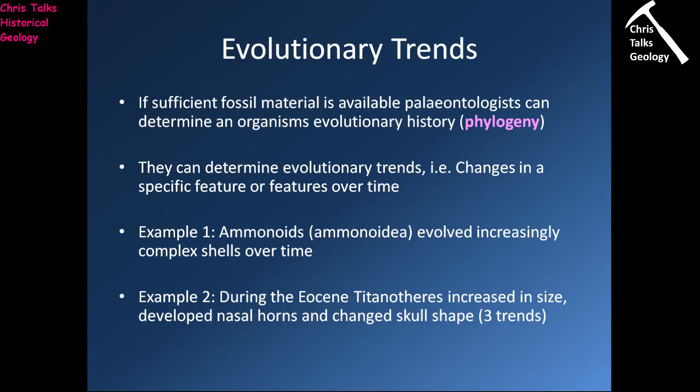Hello everybody, this is Dr. Christopher White and welcome back for part four of evolution part one. So there's only a few slides left so this should be a pretty short presentation. Let's think about evolutionary trends now. If sufficient fossil material is available, a paleontologist can determine an organism's evolutionary history, referred to as its phylogeny. So they can determine evolutionary trends — things like changes in a specific feature or features over time.